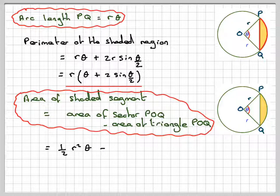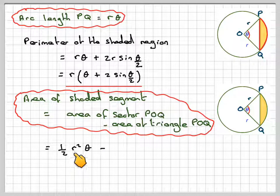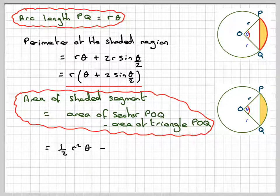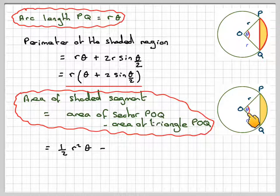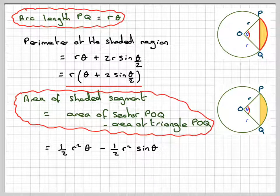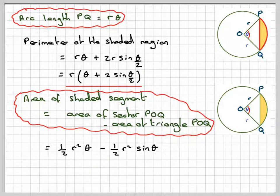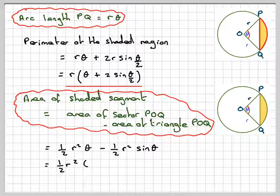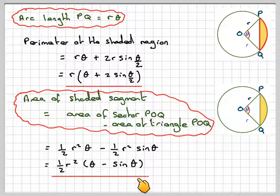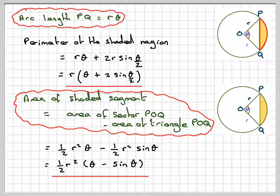So the area of a sector measured in radians is a half R squared theta, and then the area of the triangle, we use two sides and included angle, so we use a half R squared sine theta. And then there's a common factor of half R squared, so we're going to get a half R squared times theta minus sine theta as the final answer.